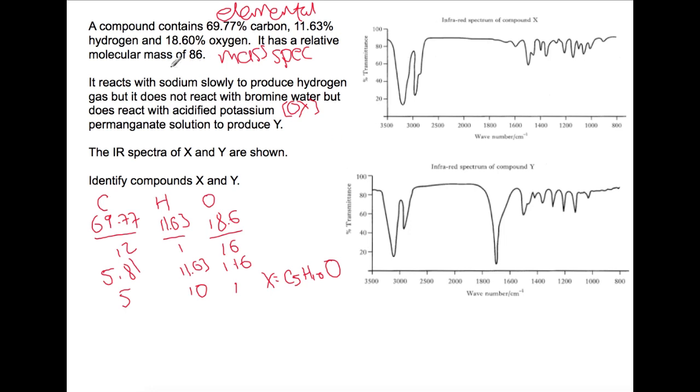If we now use the molecular mass of 86 to work out what the actual formula is. If you work out the gram formula mass of this empirical formula you'll find that that is also 86. So C5H10O is the final formula for X.